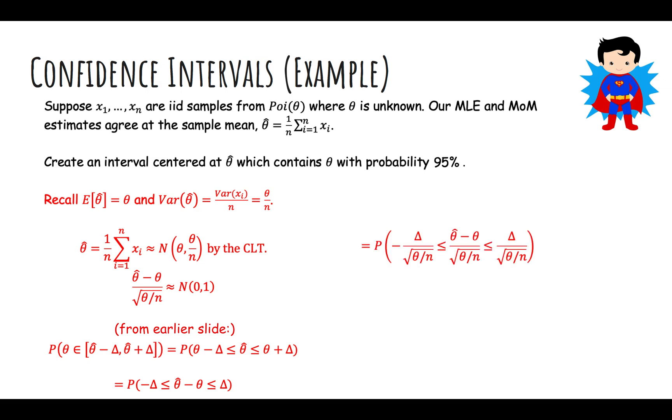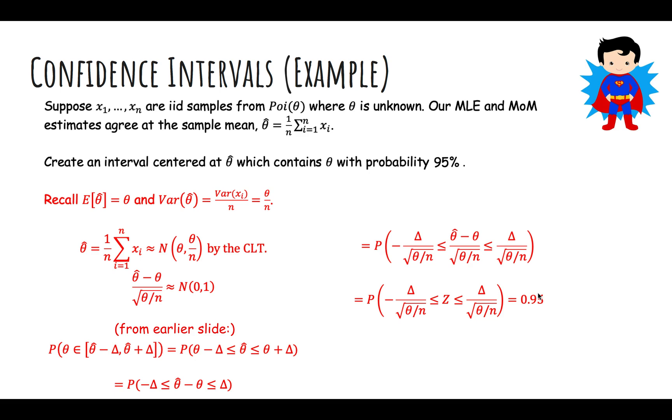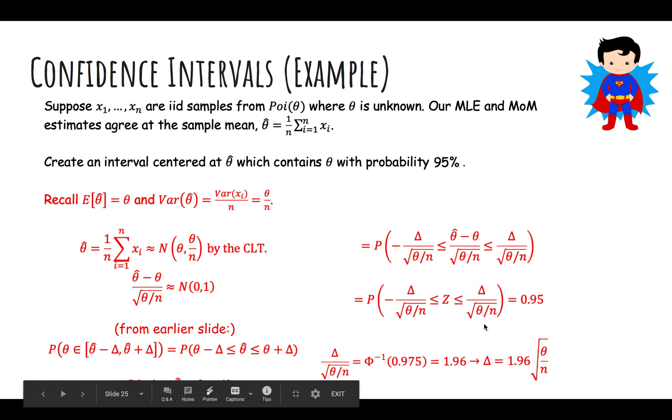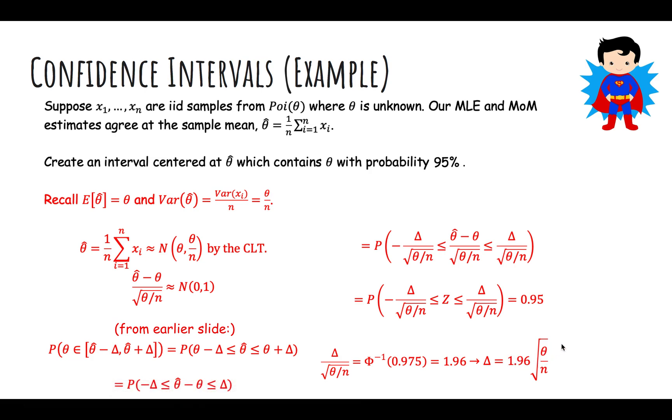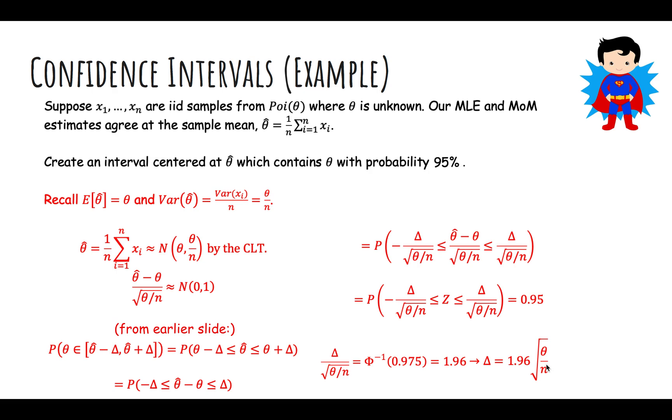The center just becomes z - normal 0, 1. We want this to be 0.95. We know that the inverse of 0.975 is 1.96, so this should be 1.96 on both sides. We solve for delta, and get that delta is 1.96 square root of theta over n. This makes sense because we need to go 1.96 standard deviations in each direction. What's the standard deviation of theta hat? It's the square root of the variance, square root of theta over n. We go 1.96 standard deviations in each direction to get this 95% area under this normal distribution which theta hat has.